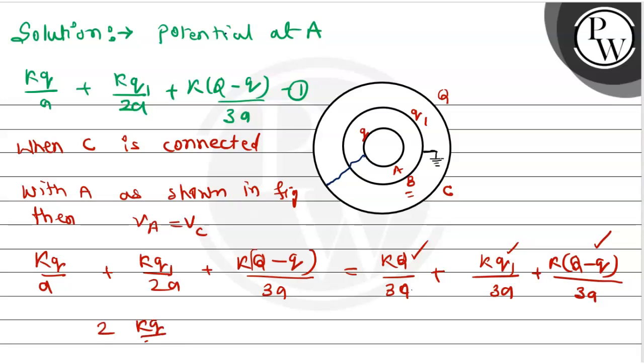2KQ upon 3A minus KQ1 upon 6A equals to KQ1 upon 6A. From this you will get Q1 is equals to minus 4Q.